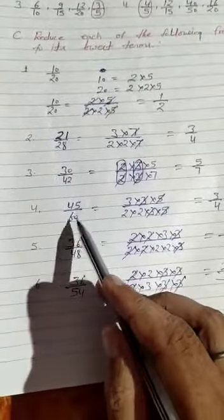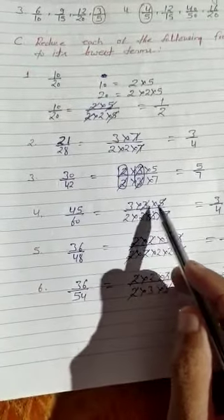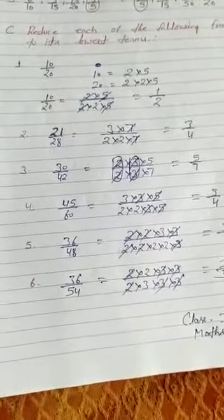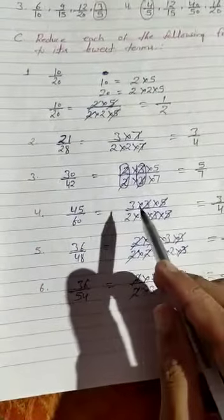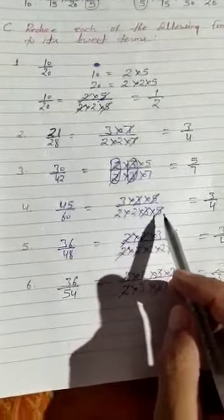Question 4: 45 upon 60. 3 times 3 times 5 is 45, and 2 times 2 times 3 times 5 is 60. The common factors cancel, giving 3 upon 4.